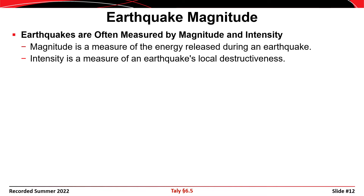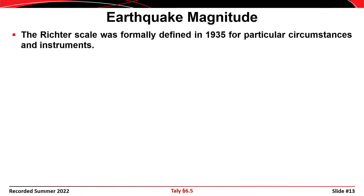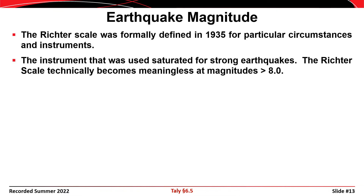Earthquakes are characterized by magnitude and intensity. Magnitude measures the energy released; intensity measures destructiveness. The Richter scale assigns a single number based on a logarithm — a 5.0 magnitude earthquake is 10 times as strong as a 4.0. Magnitude is formally defined as the logarithm of the ratio of the amplitude of the waves measured by a seismograph to an arbitrary small earthquake. The Richter scale was formally defined in 1935 for a particular set of instruments that became saturated for earthquakes larger than about 8.0.